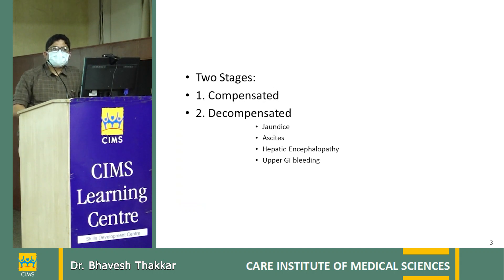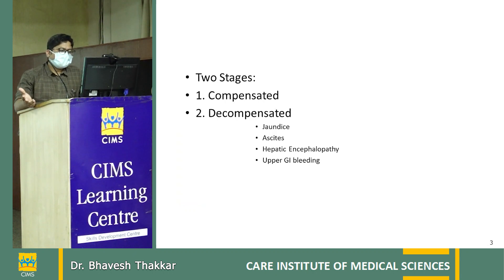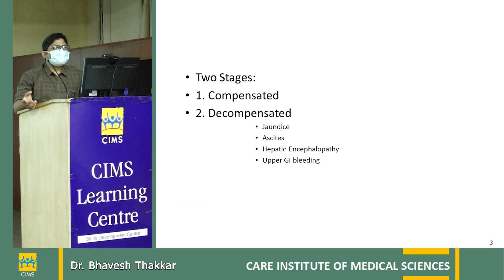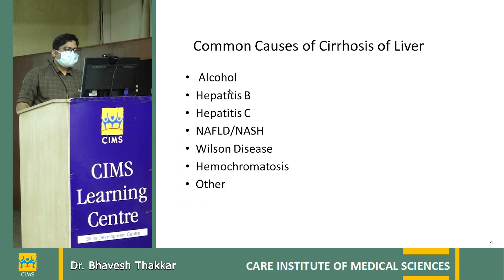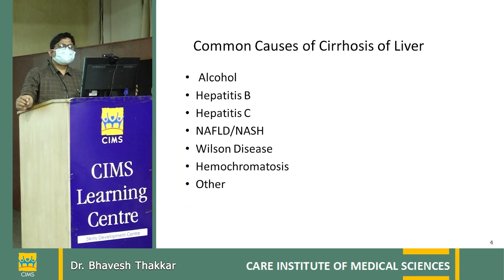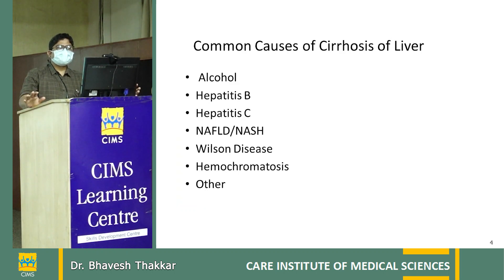In decompensated cirrhosis, the liver is not able to perform its work. The four most common indications for admission are: jaundice (yellow eyes and urine, raised bilirubin), ascites (fluid collection in the abdomen), hepatic encephalopathy (effect of rising bilirubin or reducing liver function on the brain), and GI bleed.